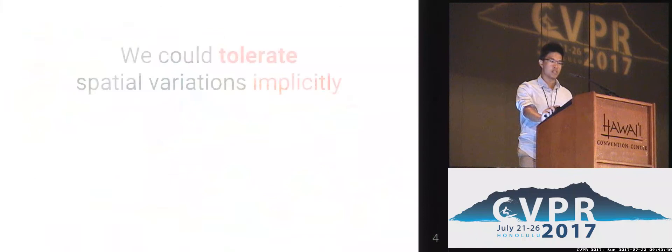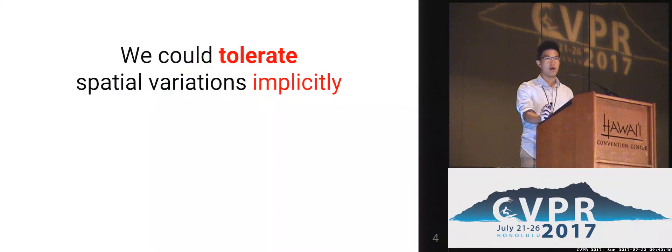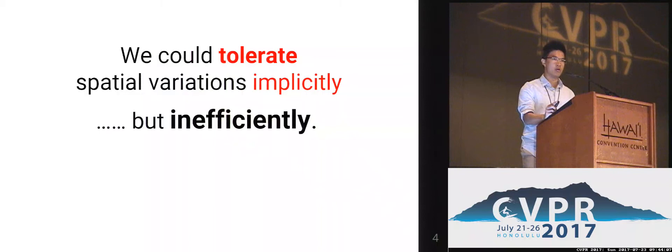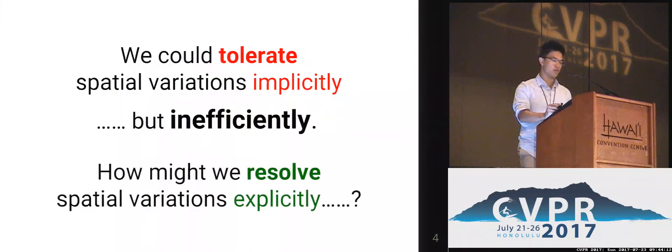We could definitely learn to tolerate these spatial variations implicitly, but we will require a huge increase in model parameters to learn these tolerations. Whereas if we could achieve some sort of alignment across data, we will be able to design a lot more efficient algorithms. And this is a very well-known and widely applied concept in the vision and learning community. So in order not to tolerate these spatial variations inefficiently, what we could do is to resolve these spatial variations explicitly.